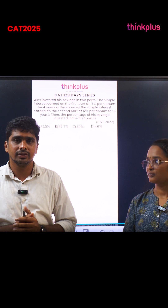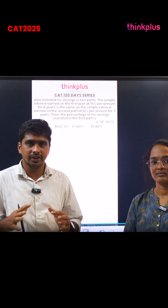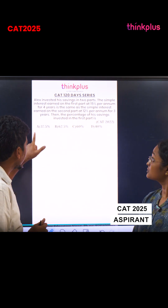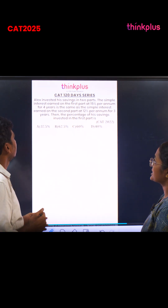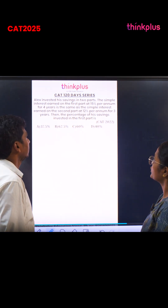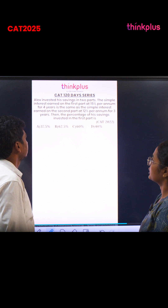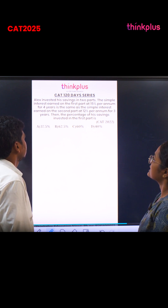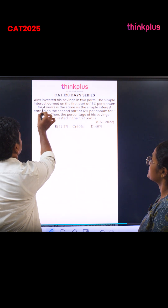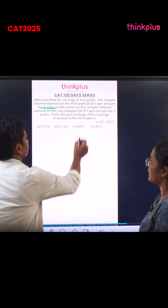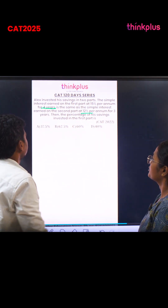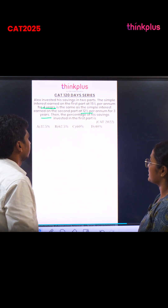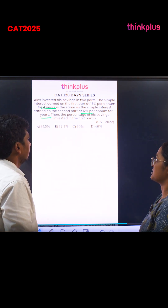Let's look at this CAAT 2022 question. We have a CAAT 2025 assessment. Anandani, could you read the question and help me? Alex invested his savings in two parts. The simple interest earned on the first part at 15% per annum for four years is the same as the simple interest earned on the second part at 12% per annum for three years. Then the percentage of his savings invested in the first part is...